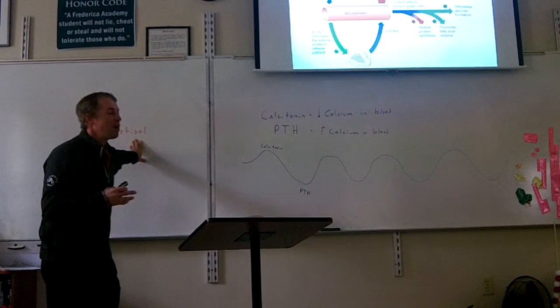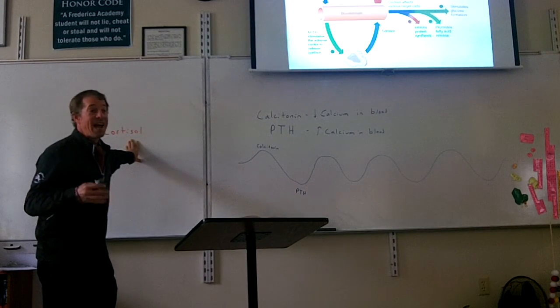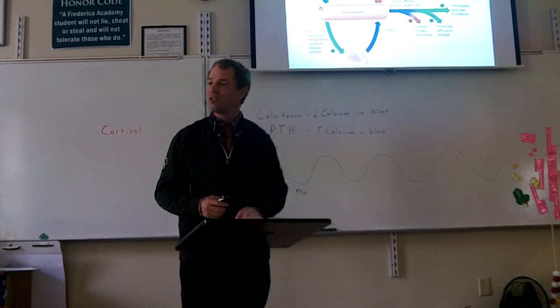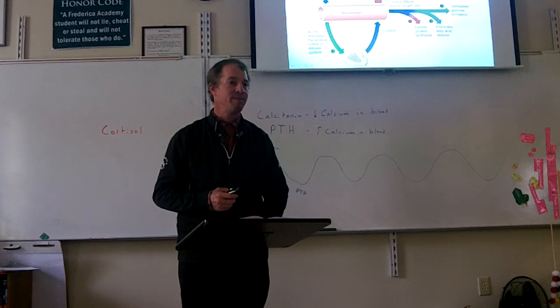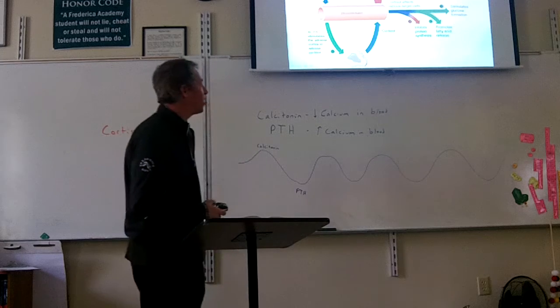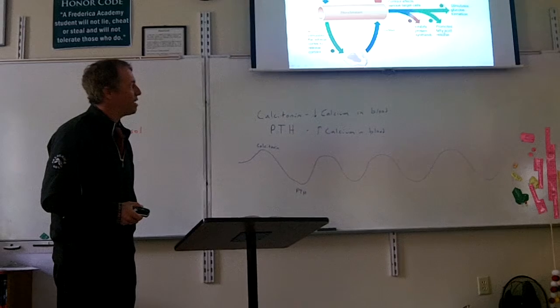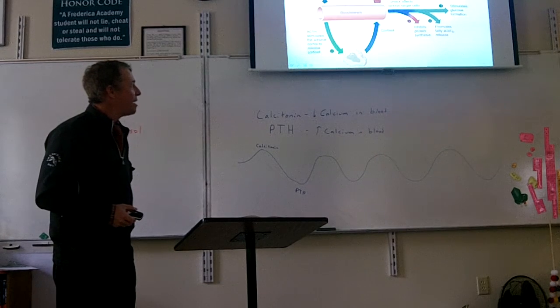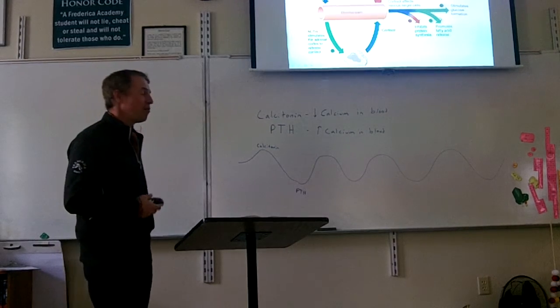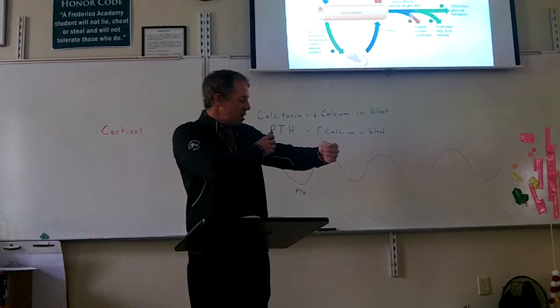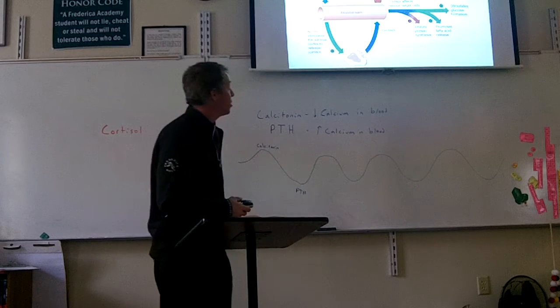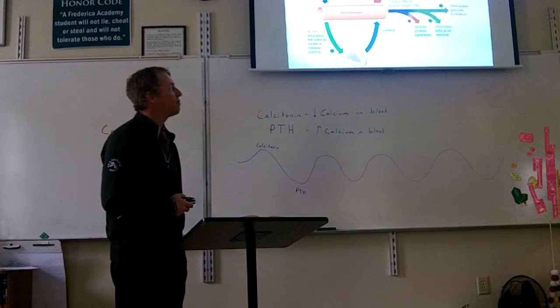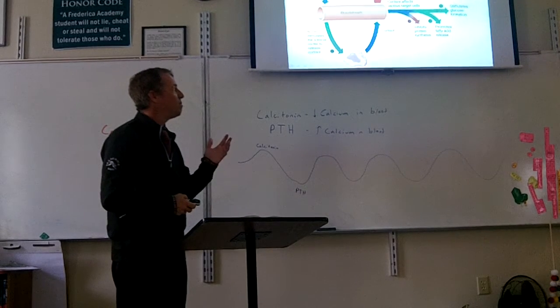Cortisol has a number of effects. Cortisol stimulates glucose formation, stimulates sugar formation by the cells in the body. So any stored sugars, like the liver stored sugar, it'll start to break down that stored sugar and release it into the blood as glucose. It'll tell some of the muscle cells to release glucose in the blood, and your blood sugar goes way up. So having a lot of sugar in the blood will be beneficial if you're under stress.